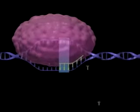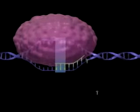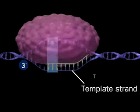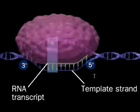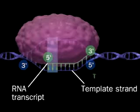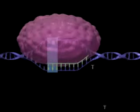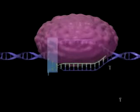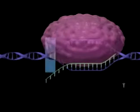RNA polymerase reads the template strand from its 3' to its 5' end, and the RNA transcript grows from its own 5' to its 3' end. The DNA double helix then rewinds.